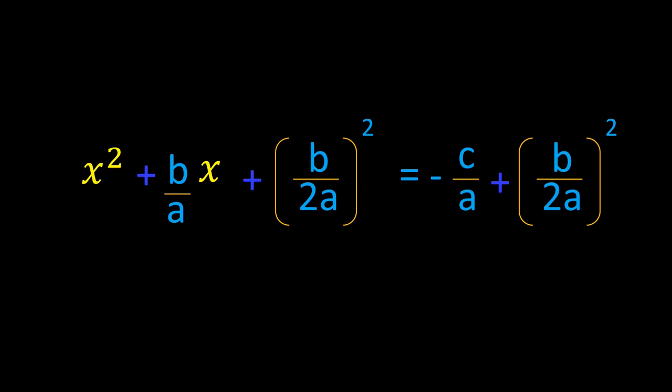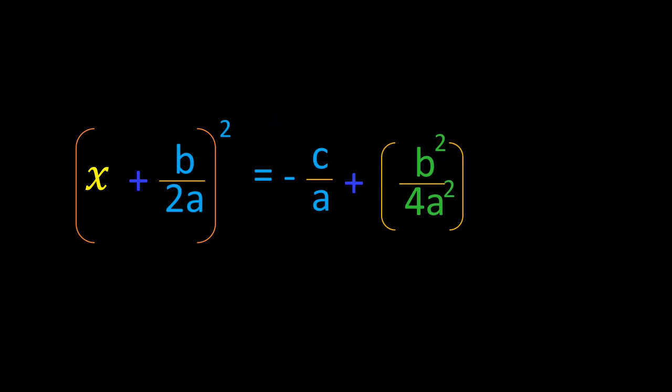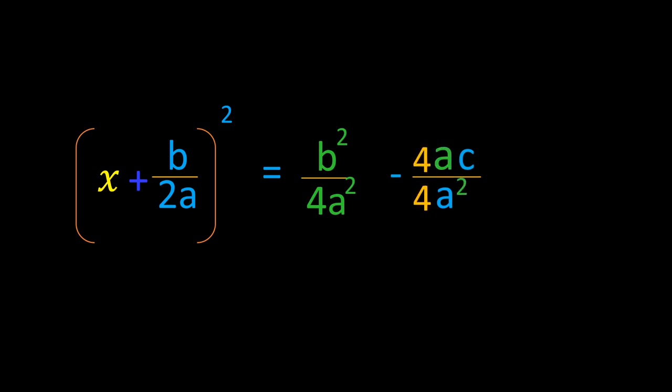Now on the LHS, we have the perfect square trinomial x squared plus b over a times x plus (b over 2a) squared, and on the RHS minus c over a plus (b over 2a) squared. The LHS can be written as (x plus b over 2a) squared by applying the (a plus b) whole square identity. Rearranging and simplifying the RHS, we have b squared over 4a squared minus c over a.